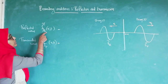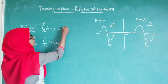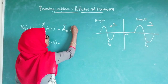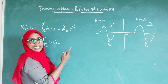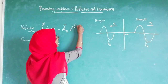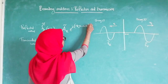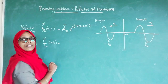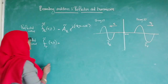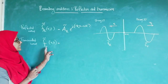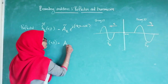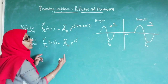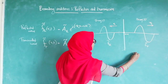For the reflected wave, using the notation F_R of X,t, this can be written as A_R times e raised to i into minus K1X minus omega t. Since it is travelling in the negative X direction, there is a negative sign on K1X. For the transmitted wave, F_T of X,t equals A_T times e raised to i into K2X minus omega t. Since the wave travels along the second string, its wave number is K2.